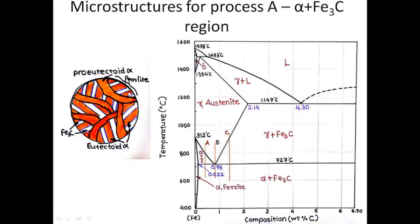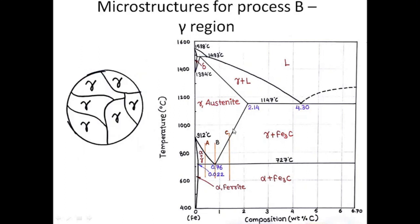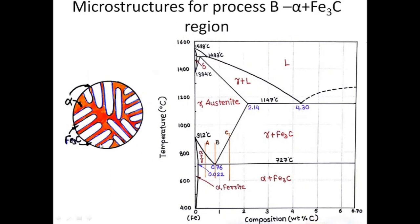This layered structure is known as pearlite — a layered structure of Fe3C and eutectoid alpha. For process B, which is the eutectoid process, when we are in the gamma austenite zone we have grains of gamma austenite. As soon as we cross the eutectoid line by cooling, we get the layered structure of alpha and Fe3C, meaning we have only pearlite.